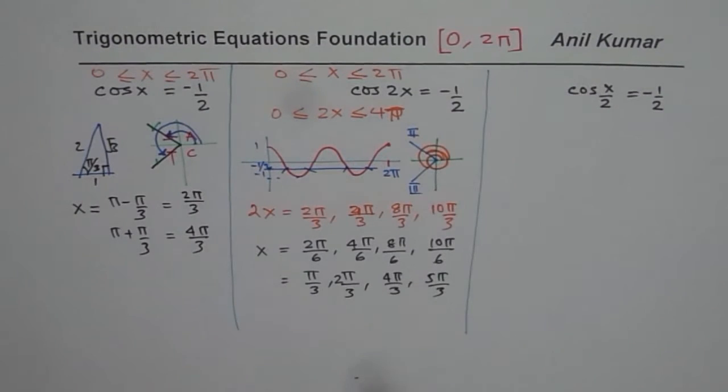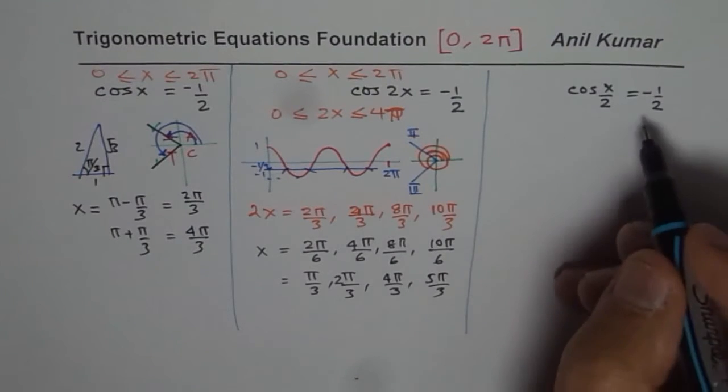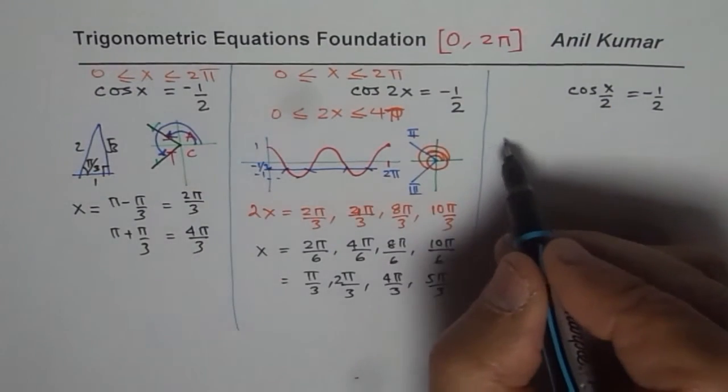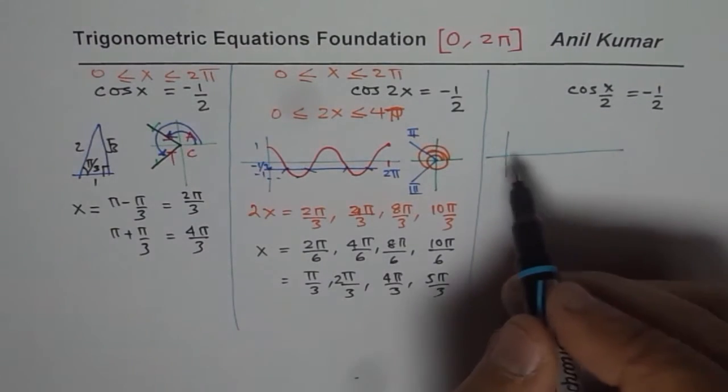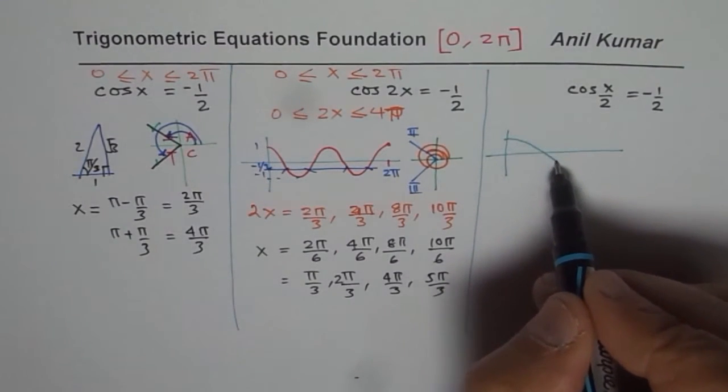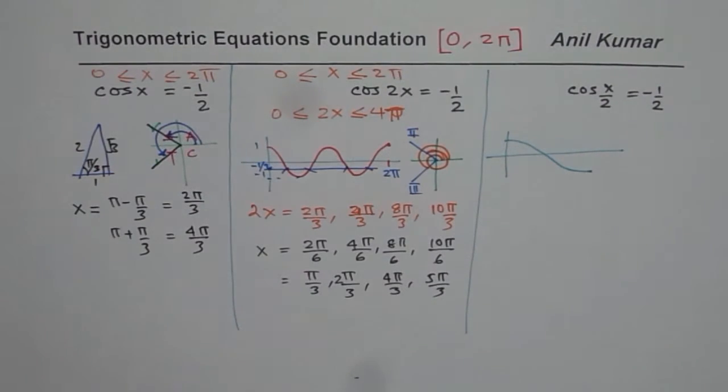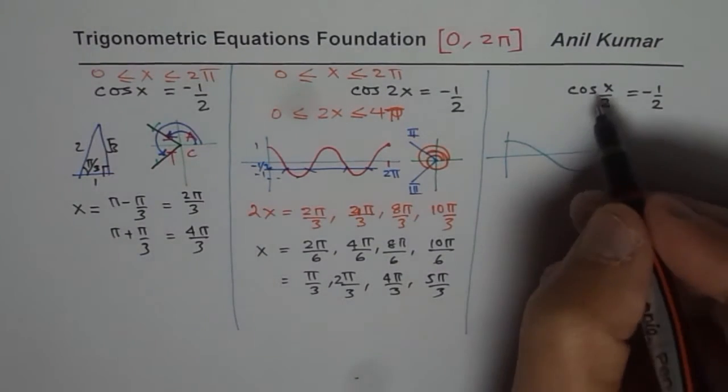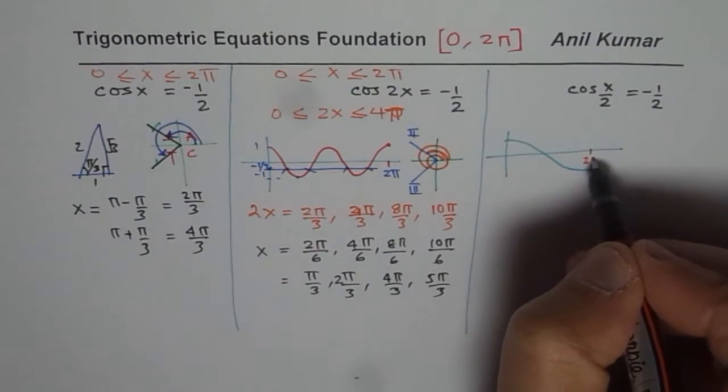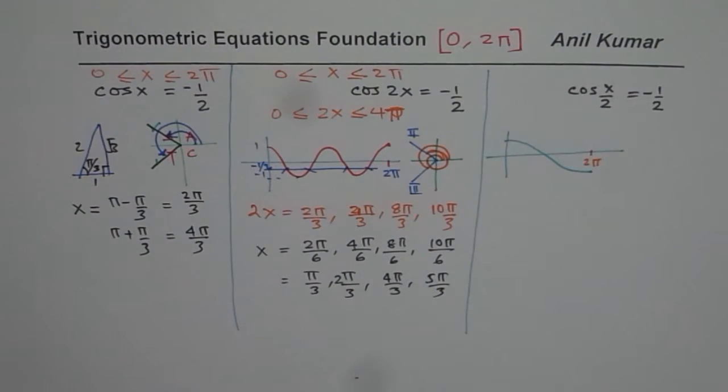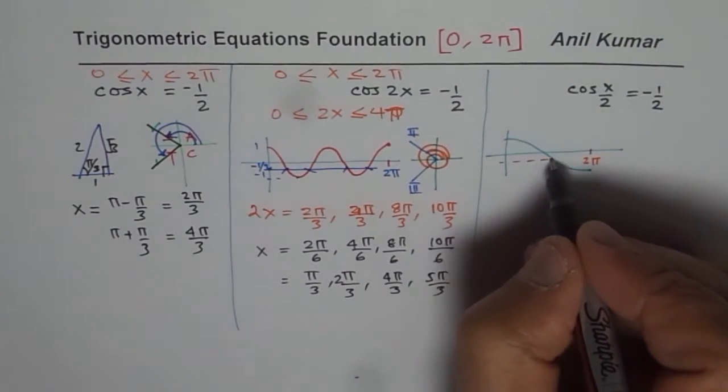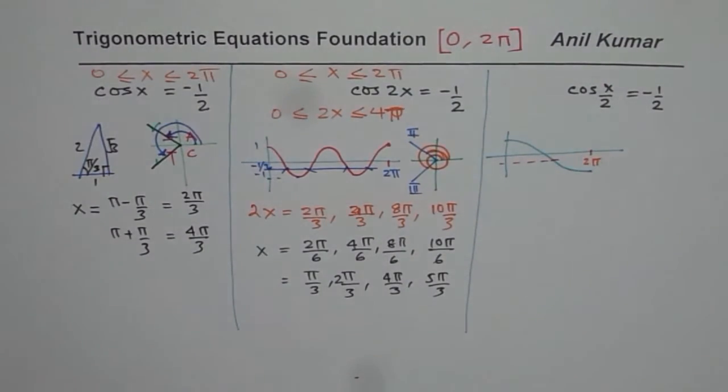Now, let's look into the third case. I'll appreciate if you could pause the video and answer this one. We'll try to analyze it in the same fashion. Here, we have half the wave into π, because x by 2. That is 2π. So for minus half, we are only expecting one solution.